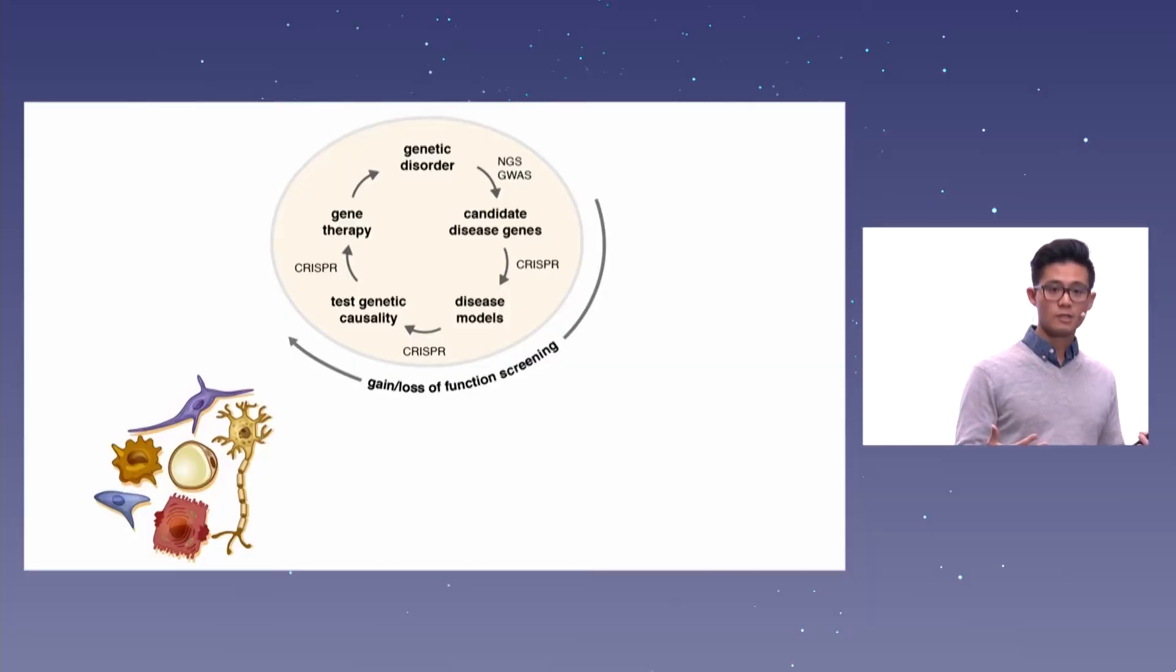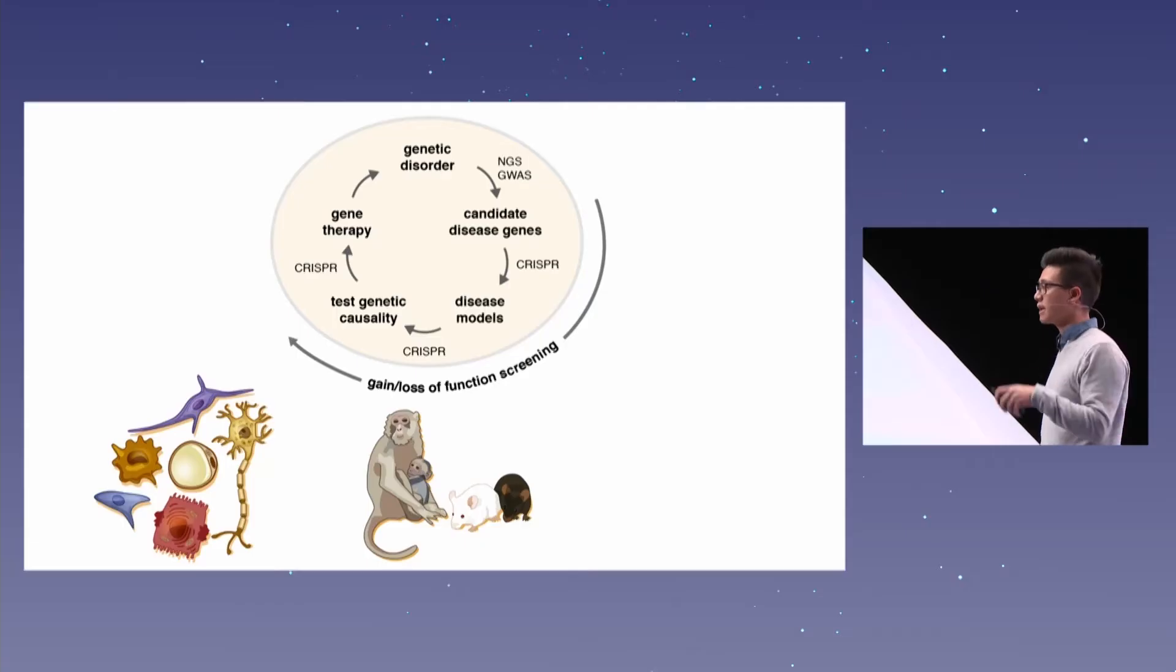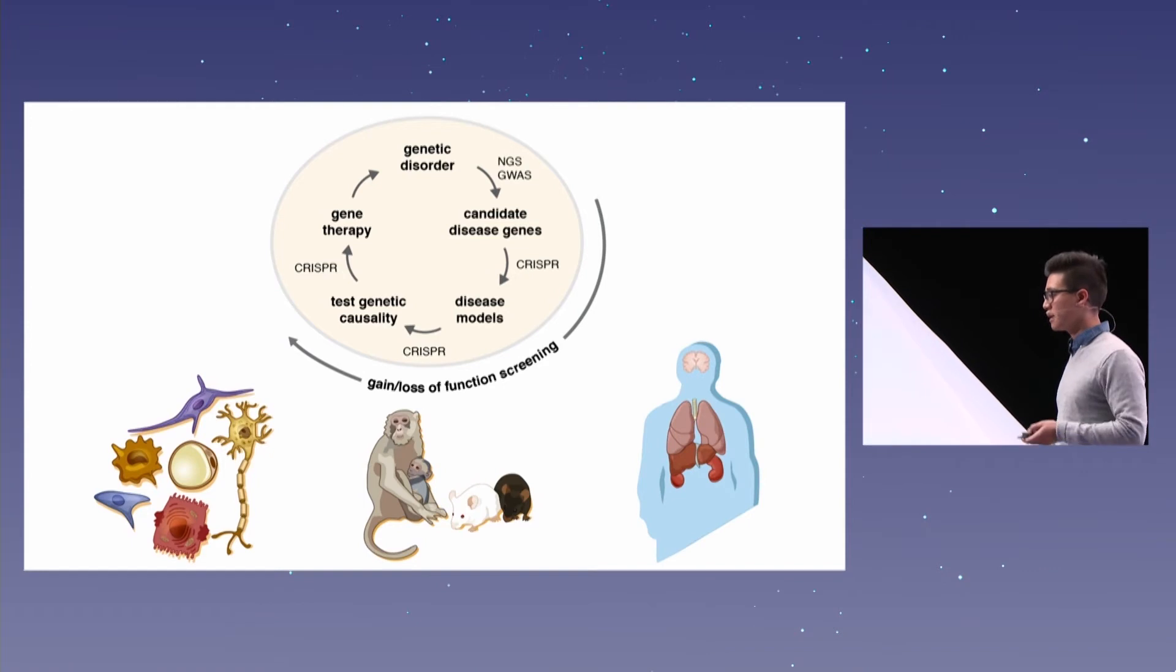But oftentimes, when we're modeling disease, you want to look at something at the physiological or behavioral level, right? And to do that, you can make animal models such as rodent or non-human primate models to better get a sense of things like cognitive disorder. Now, if you have this genetic causality, though, the tantalizing possibilities, could we actually go ahead and try to fix these directly in humans?